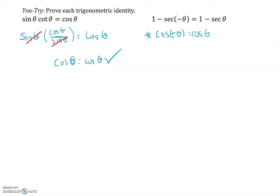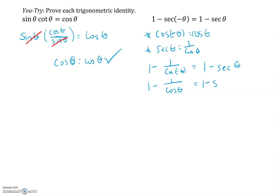So I'm going to rewrite secant of negative theta as one over cosine of negative theta, since secant theta is one over cosine theta. I'll manipulate the left side: one minus one over cosine of negative theta, leaving the right side as one minus secant theta. Now, cosine of negative theta is the same as cosine theta — if you go to the unit circle, the x-value doesn't change with a reflection into the fourth quadrant. So one over cosine theta is once again secant theta, giving us one minus secant theta equals one minus secant theta.